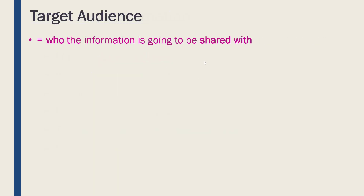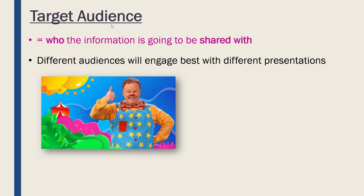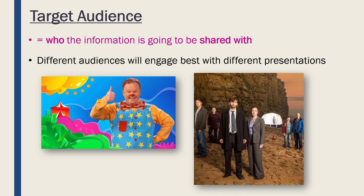The target audience is who the information is going to be shared with — the people receiving your information. Considering your target audience is really important from a business perspective because different audiences will clearly engage better with certain presentations than others. For example, kids' TV like Mr. Tumble is not going to appeal to most adults, whereas a more grown-up TV series like Broadchurch is not going to appeal to children but may appeal to adults. Each programme is made with a specific target audience in mind, and they change how they present the story based on that.